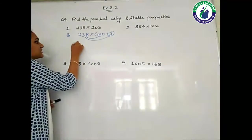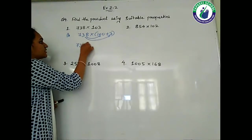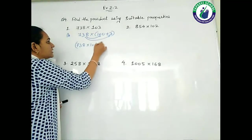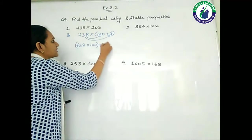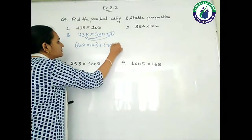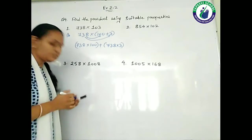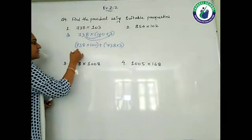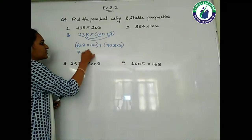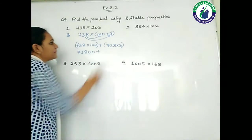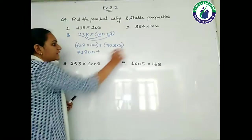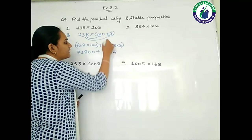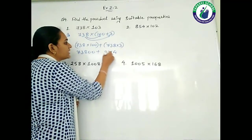So 738 multiplied by 100, then 738 multiplied by 3. So 738 multiplied by 100 gives us 73,800. Now 738 multiplied by 3: 3 eights are 24, 3 nines plus 2 is 11, 21 plus 2 is 22 — so 2,214.